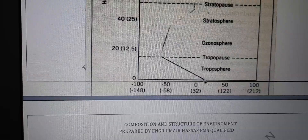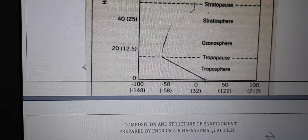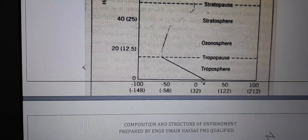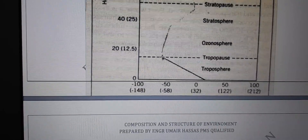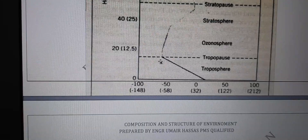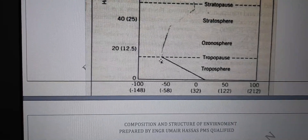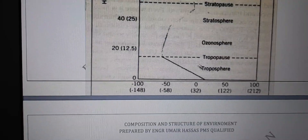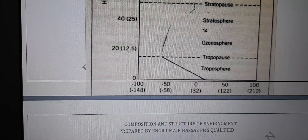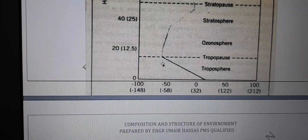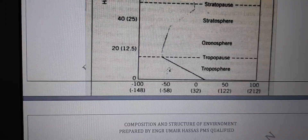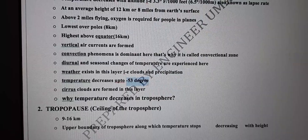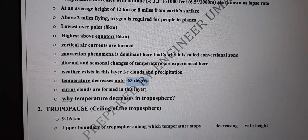Coming back to the diagram: at the surface of earth the temperature is almost 15 degrees, and as you go upward temperature decreases. When you reach the boundary of troposphere — the tropopause, shown by the dotted line, which is the boundary between troposphere and stratosphere — the temperature at that point is minus 53 degrees centigrade. This decrease in temperature with altitude is called the lapse rate.